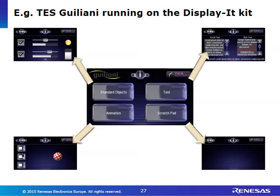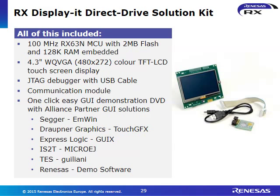In summary, the RX Display Solution Kit includes the RX microcontroller RX63M with 2 MB flash and 128 KB RAM. It drives the wide QVGA display on the front of the kit and comes with a JTAG debugger. An optional communication module is available. It offers one-click easy GUI demonstrations enabling you to evaluate alliance partners including SEGA, Draupner, ExpressLogic, IS2T, and TESS, as well as Renesas's own demo software.